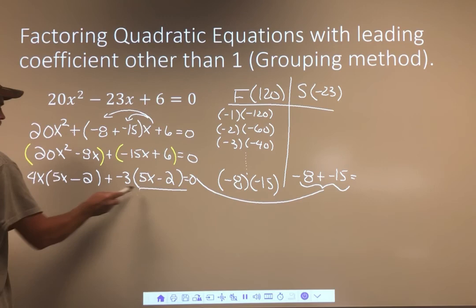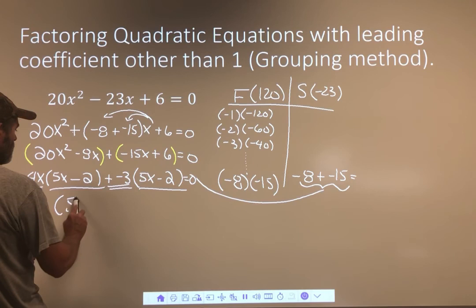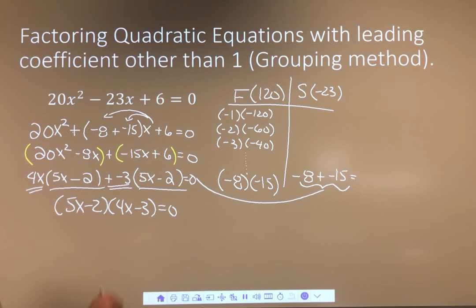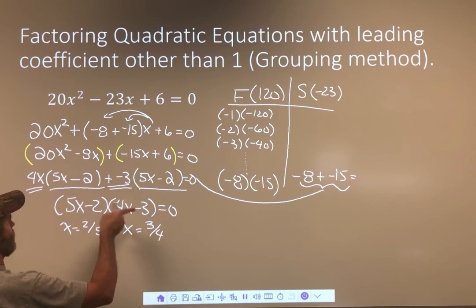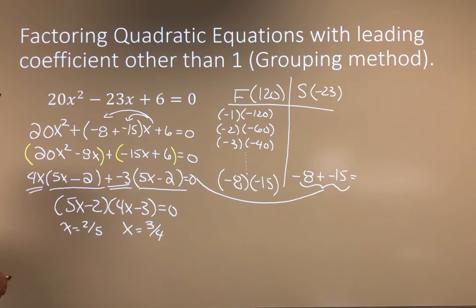So I have (5x − 2)(4x − 3). Separating and solving: 5x − 2 = 0 gives x = 2/5. And 4x − 3 = 0 gives x = 3/4. Add the 2 and divide by 5; add the 3 and divide by 4. So the answers are 2/5 and 3/4. Okay, that's it — that's the last example.